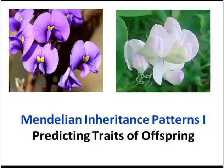Now that we know how gametes are produced during the process of meiosis, we can use that information to predict how traits will be inherited from parents to offspring. In this first video, we're going to take a look at a few Mendelian inheritance patterns.